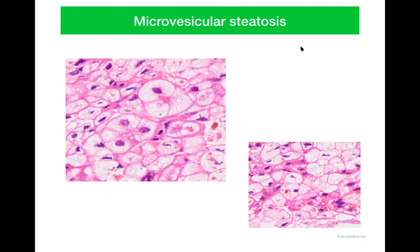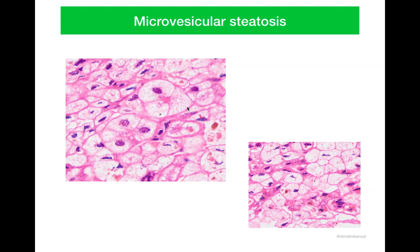Next, coming on to microvesicular steatosis. In microvesicular steatosis, there are multiple small tiny vacuoles — so small that at times it will be difficult to identify them on H&E, and the cytoplasm will look bubbly, as if it is that of a foamy histiocyte. The picture is likened to that of a foam cell. At higher magnification, you can identify very small minute droplets within the cytoplasm of the cell. In microvesicular steatosis, the nucleus is going to be central with multiple small tiny droplets within the cytoplasm.